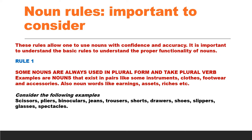Rule 1. Some nouns are always used in plural form and take plural verb. Examples are nouns that exist in pairs like some instruments, clothes, footwear and accessories. Also this category includes noun words like earnings, assets, riches, surroundings etc.